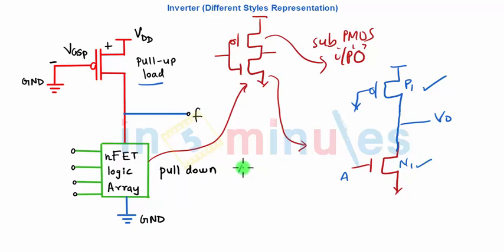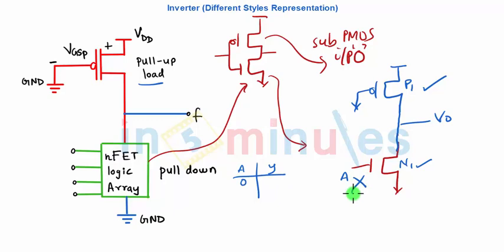Let's see whether this works or not. Input A, output Y. When input A is zero, N1 is off because NMOS turns on when logic 1 is applied. So P1 is on, and it pulls the output to VDD.